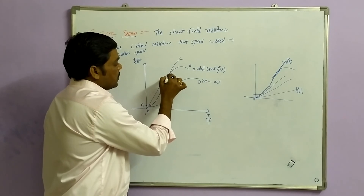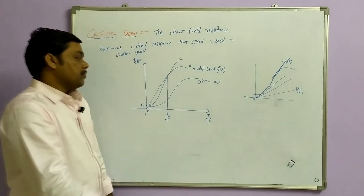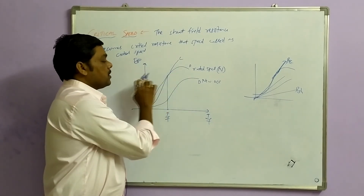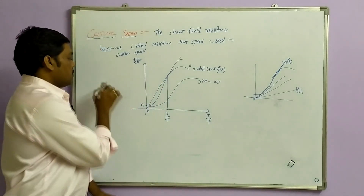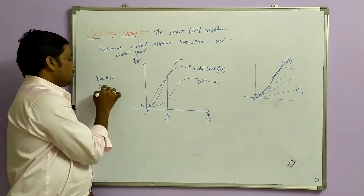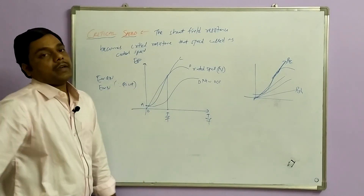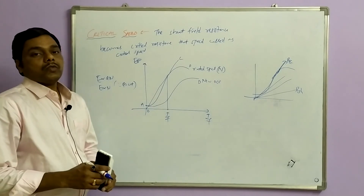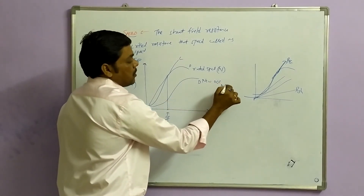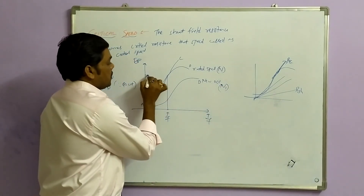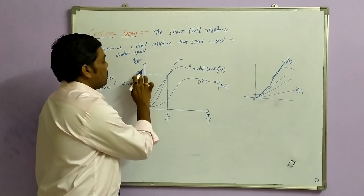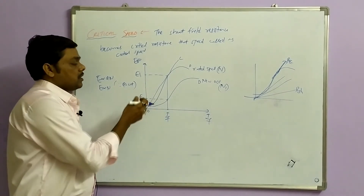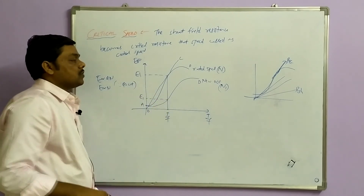So the generated voltage changes with speed change. This is the new OCC at speed N. Now extend the lines to the left. If speed increases, generated EMF also increases. If speed decreases, generated EMF also decreases. E1 corresponds to N, and E is shown on the y-axis.